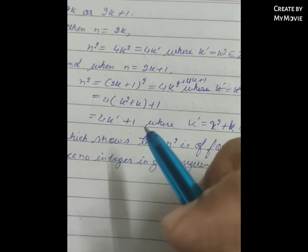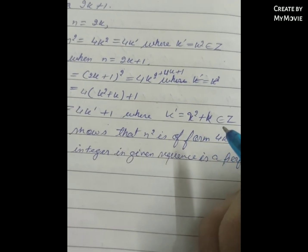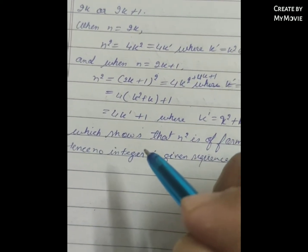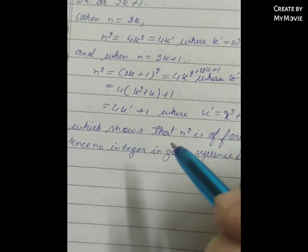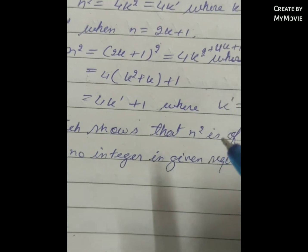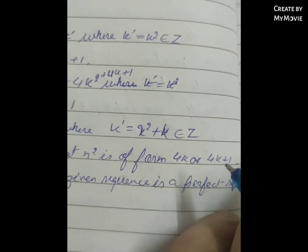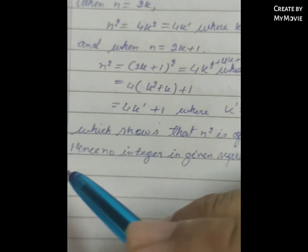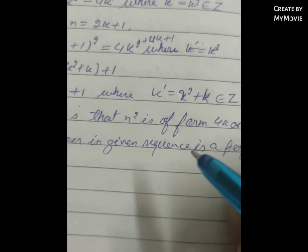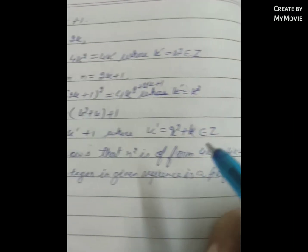This shows that n² is always of the form 4k or 4k+1. Since every integer in the given sequence is of the form 4k+3, and no perfect square can be of the form 4k+3, hence no integer in the given sequence is a perfect square.